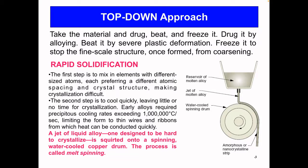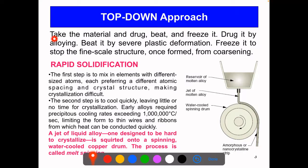The first example is called rapid solidification. In general, in the top-down approach, you take your material and drug, beat, and freeze it: drug it by alloying, beat it by severe plastic deformation, and freeze it to stop the fine-scale structure once formed from coarsening.